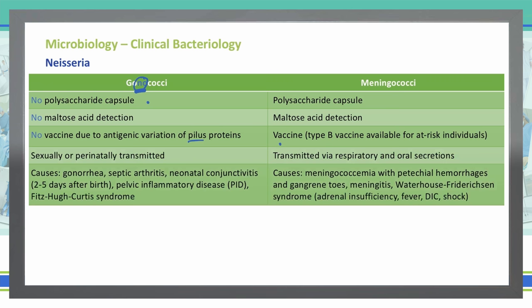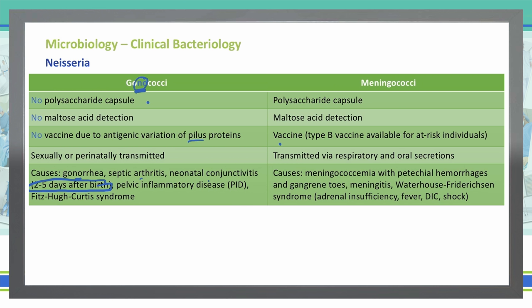The main diseases caused by gonococcal bacteria include gonorrhea, septic arthritis, neonatal conjunctivitis — typically found two to five days after birth — pelvic inflammatory disease, and Fitzhugh-Curtis syndrome. Meningococci will cause meningococcemia with petechial hemorrhages, as well as gangrene toes, and meningitis.